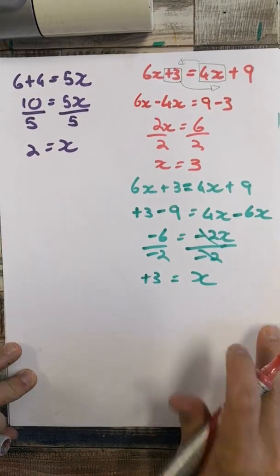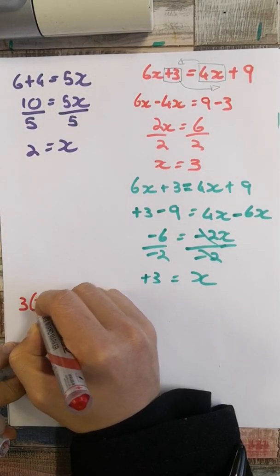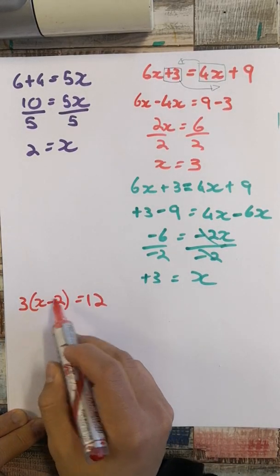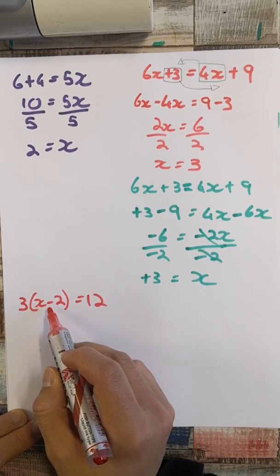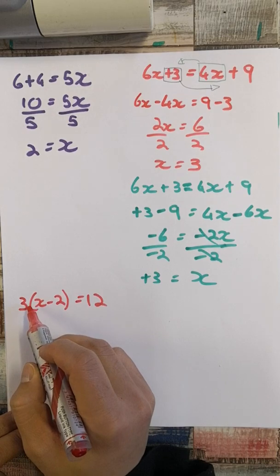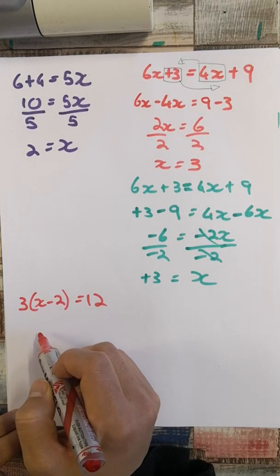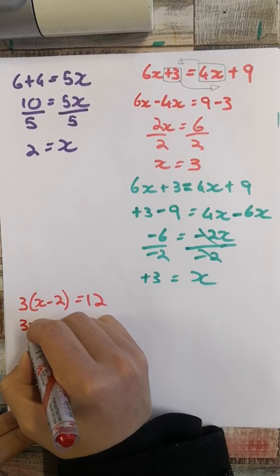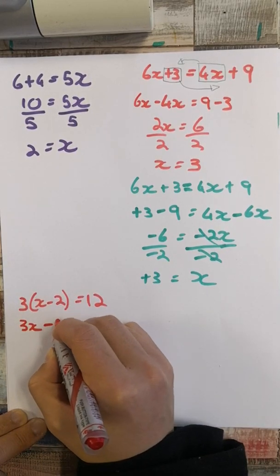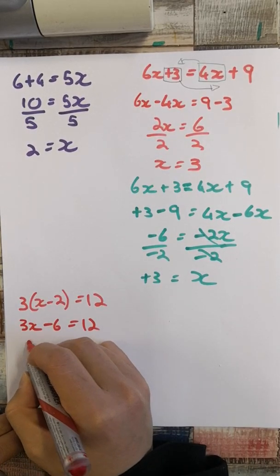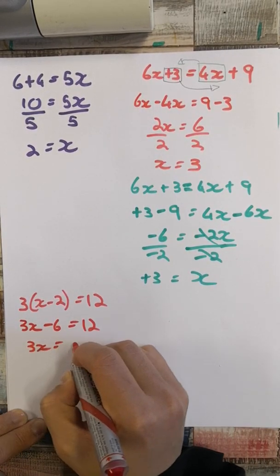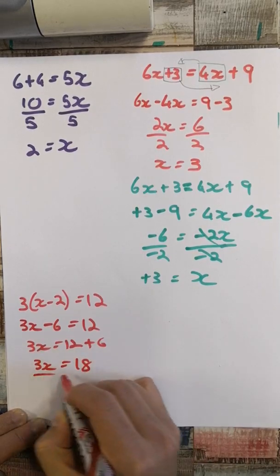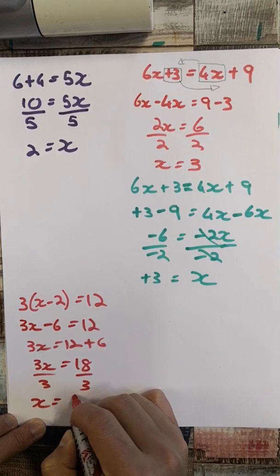Let's use a bit of FOIL in our solving for x: 3 open brackets x minus 2 equals 12. I'm going to multiply it in. 3 times x is 3x, and 3 times negative 2 is negative 6, which equals 12. Take the negative 6 over — it changes to positive 6 — so 3x equals 18. Divide by the coefficient: x equals 6.